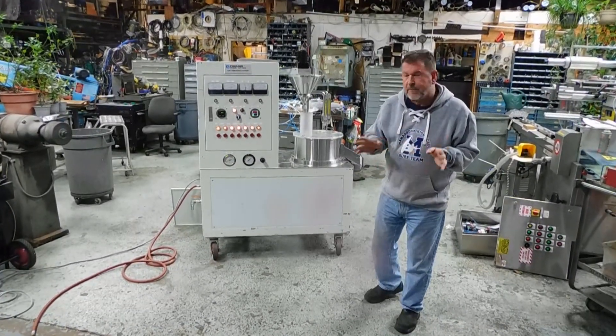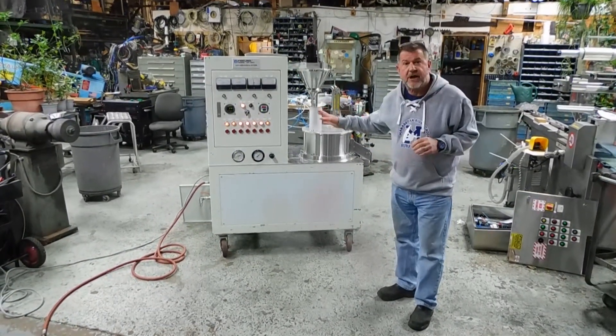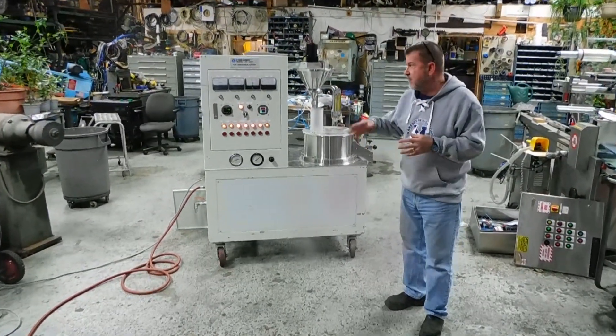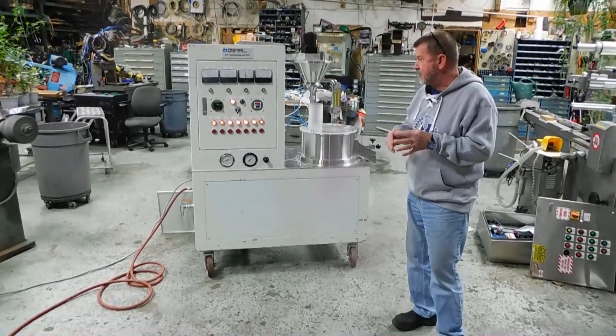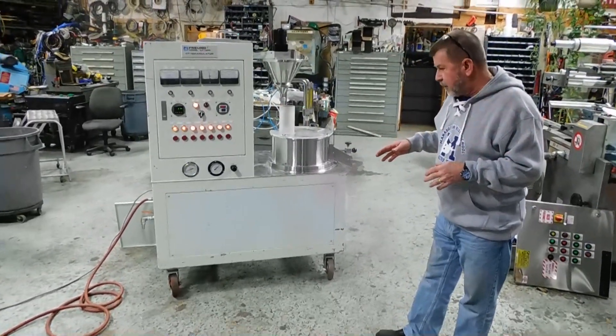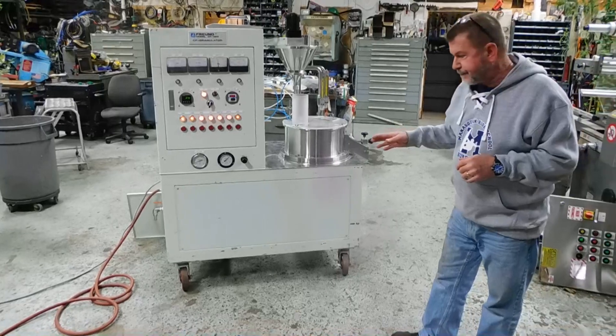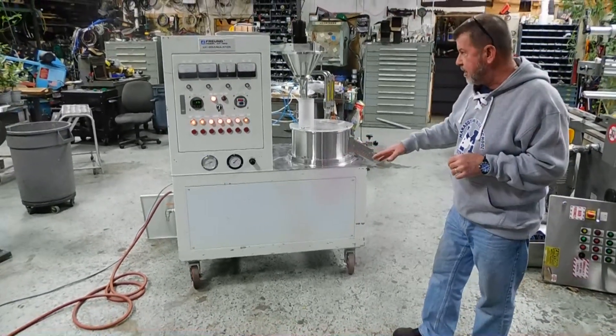Hi everybody, we've been asked to do a demonstration of this spray granulating machine by Prune. It's part of Vector here in the United States, Prune is the Japanese manufacturer. We're operating on 220 three-phase voltage right now. We have air supply to the unit.